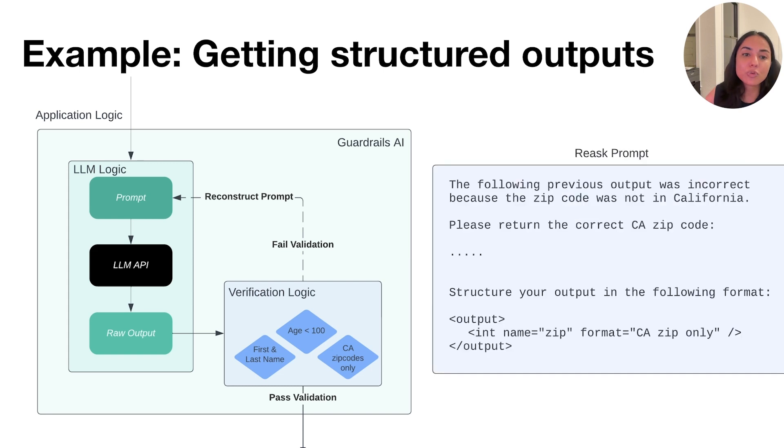And a new prompt is automatically created by guardrails, and this prompt looks something like this, where we provide the relevant context about why the failure occurred, which is that the zip code was not a California zip code, and more helpful context about structuring the output so that it can be combined with the previously generated output, so we only ask for the thing that was incorrect, which in this case is the zip code.